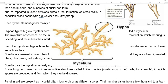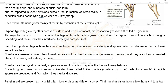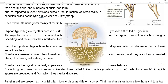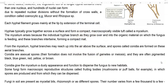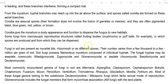Each hyphal filament grows mainly at the tip by extension of the terminal cell. Hyphae typically grow together across a surface and form a compact, macroscopically visible tuft-like structure called mycelium. Mycelium arises because of individual hyphal branches that grow over one another mainly on an organic material-containing surface where the fungi feed, and these branches interweave forming a compact mat-like appearance.